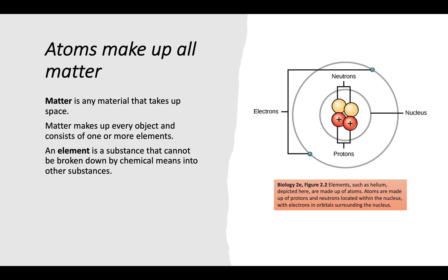So let's start by talking about atoms. Atoms make up all matter. We did start talking about atoms in the last chapter — atoms form molecules, which then form cells, the smallest forms and sources of life. Matter is any material that takes up space, living or non-living. Matter makes up every object and consists of one or more elements. An element is a substance that cannot be broken down by chemical means into other substances.